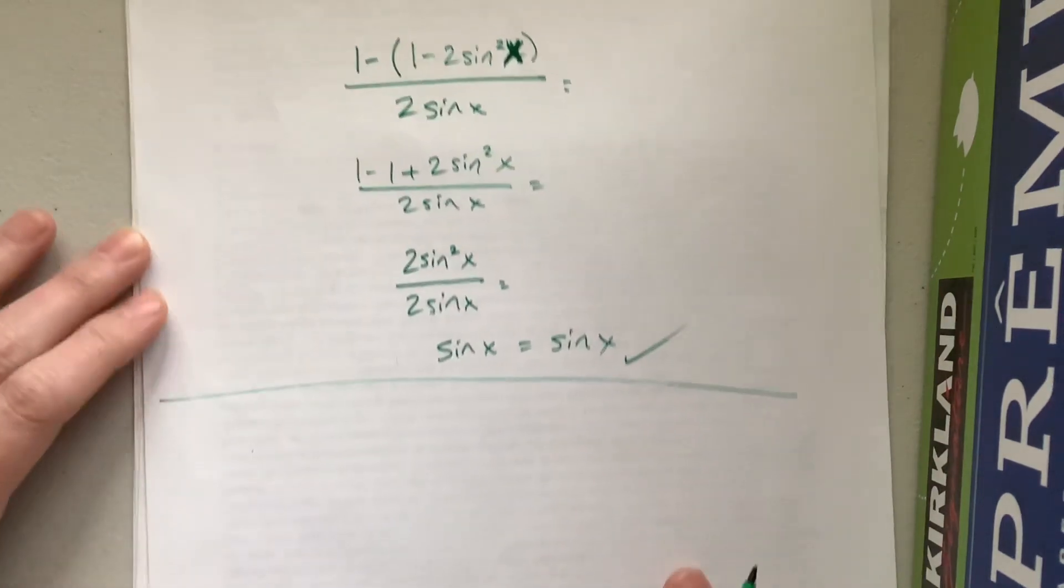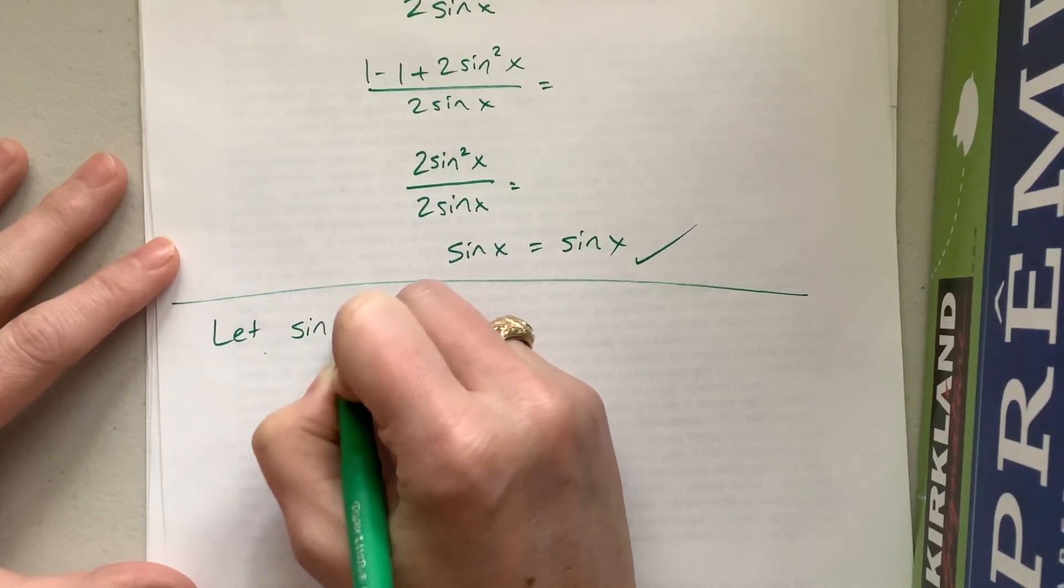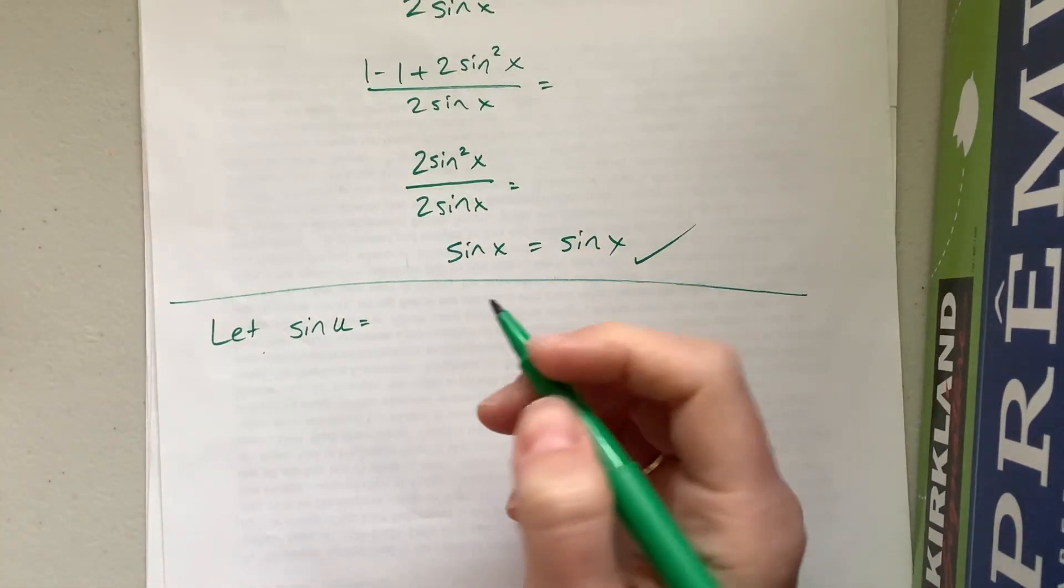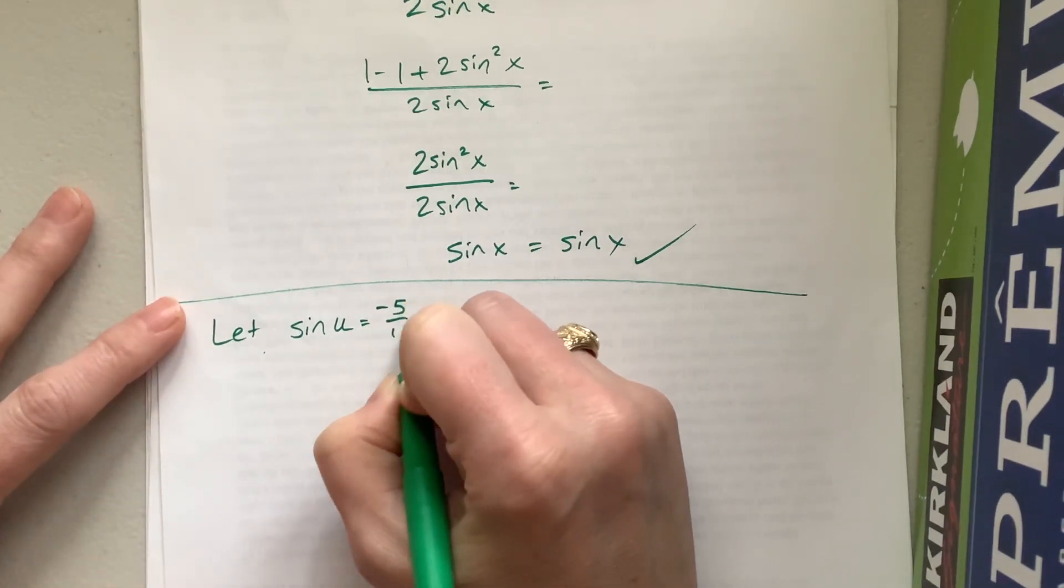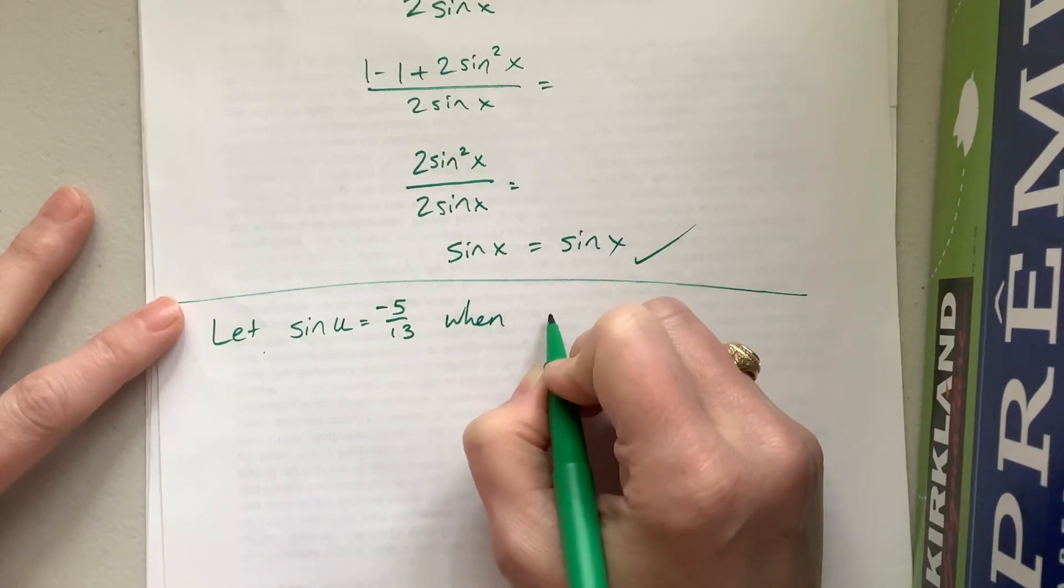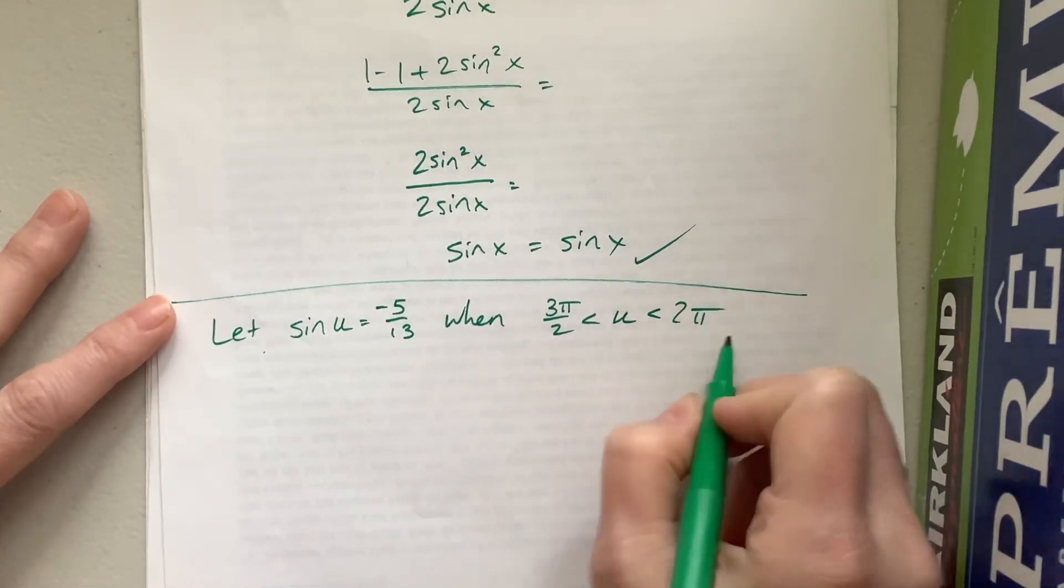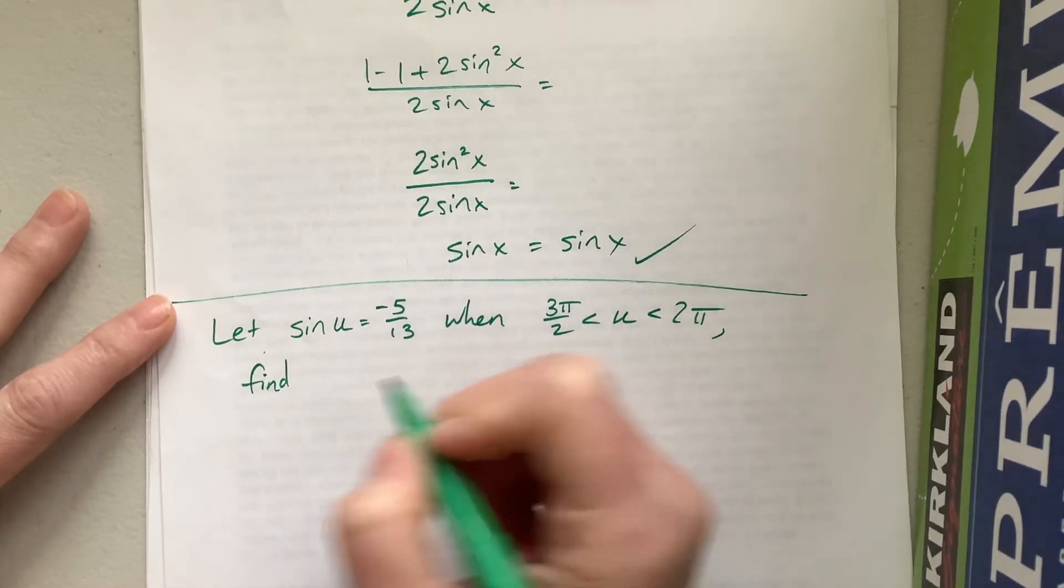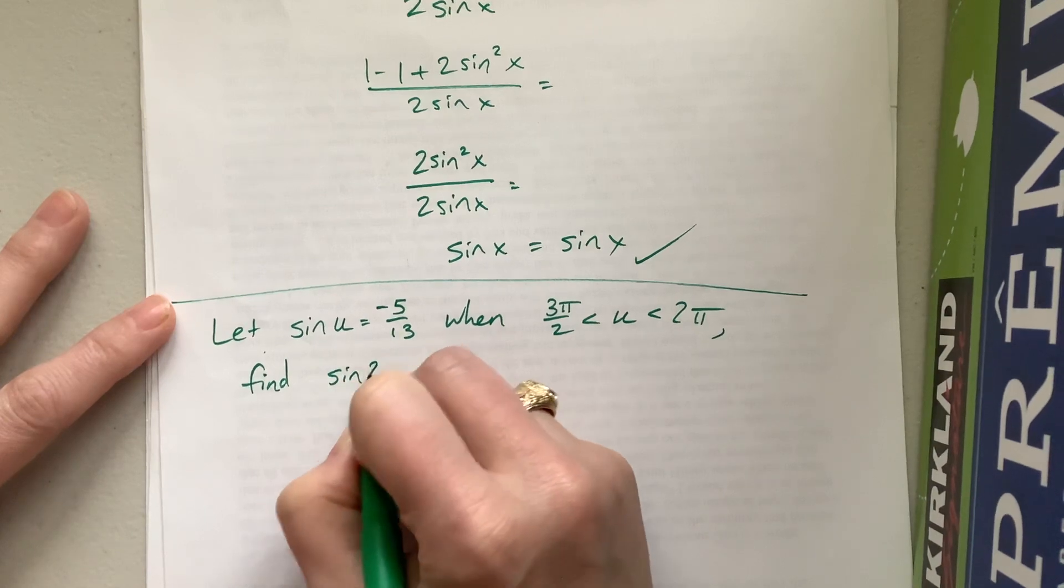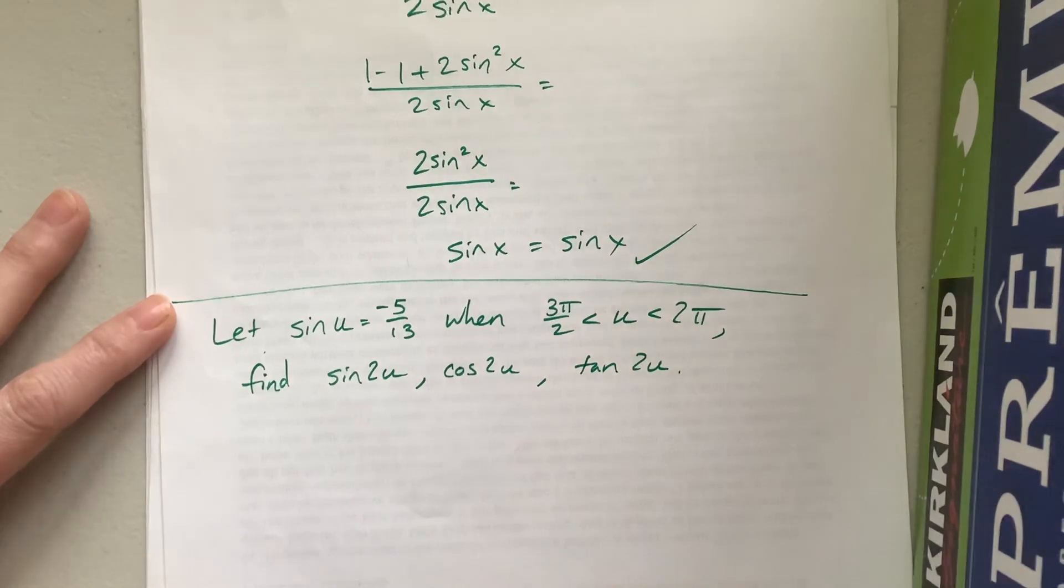The other thing they might do is they might say, let sine of u equal, I'm making something up, let's make it relatively nice, negative 5 thirteenths when 3 pi over 2 is less than u is less than 2 pi. Okay, so then they'll say find, let's do all three: sine of 2u, cosine of 2u, and tangent of 2u.